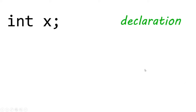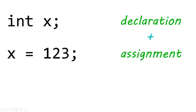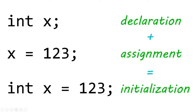So how do we create a variable? The first process is declaration — we list the data type followed by a variable name like x, and end the statement with a semicolon. The next step is assignment — we take our variable and assign it equal to some value of the declared data type. You can also combine steps one and two together, which is called initialization: data type, variable name, equals some value, then a semicolon.